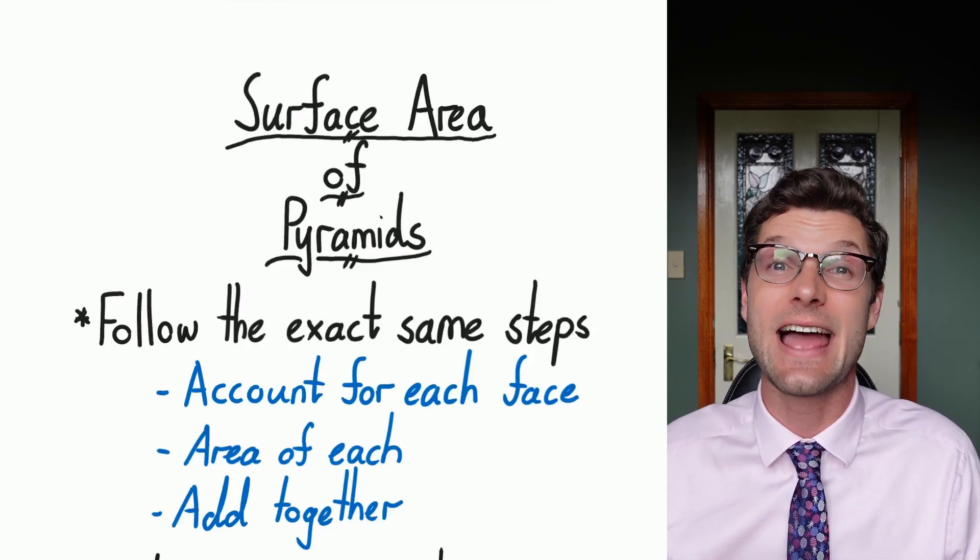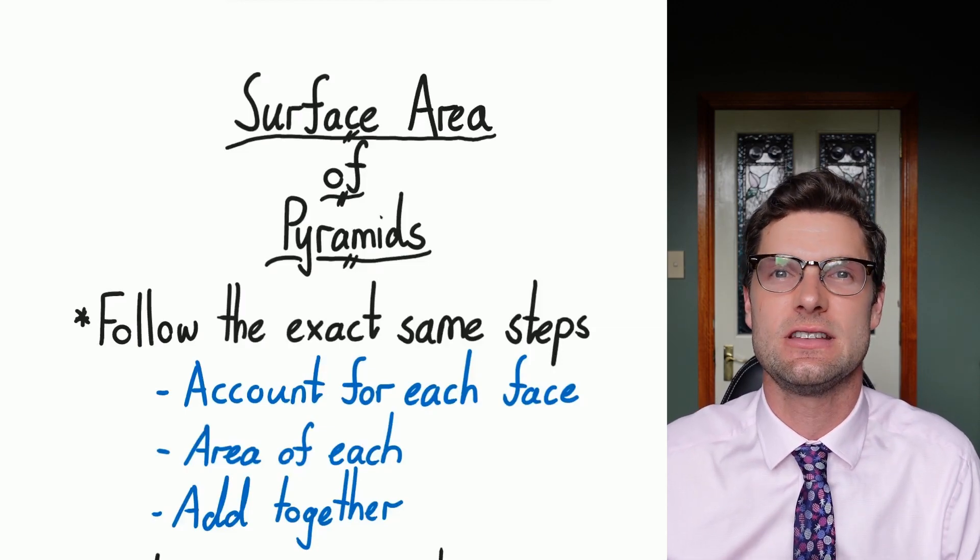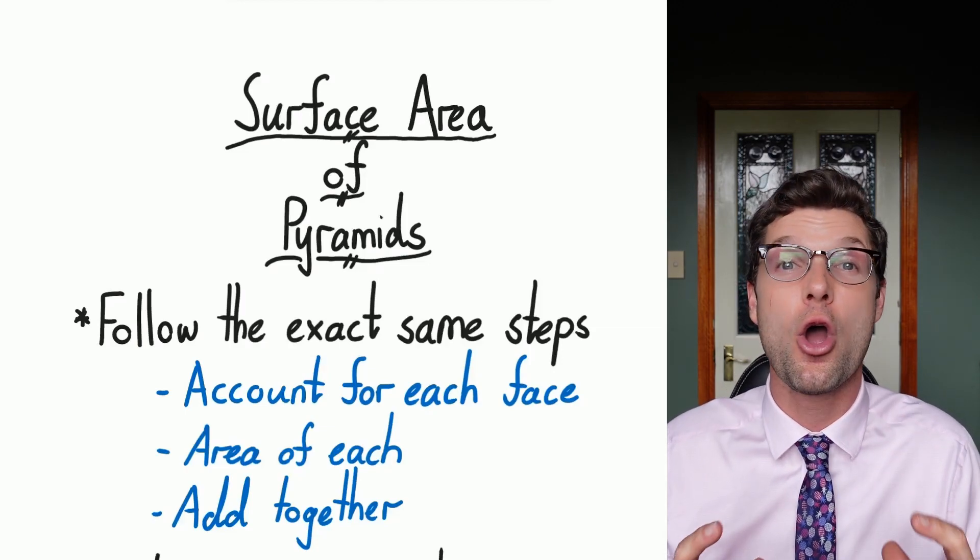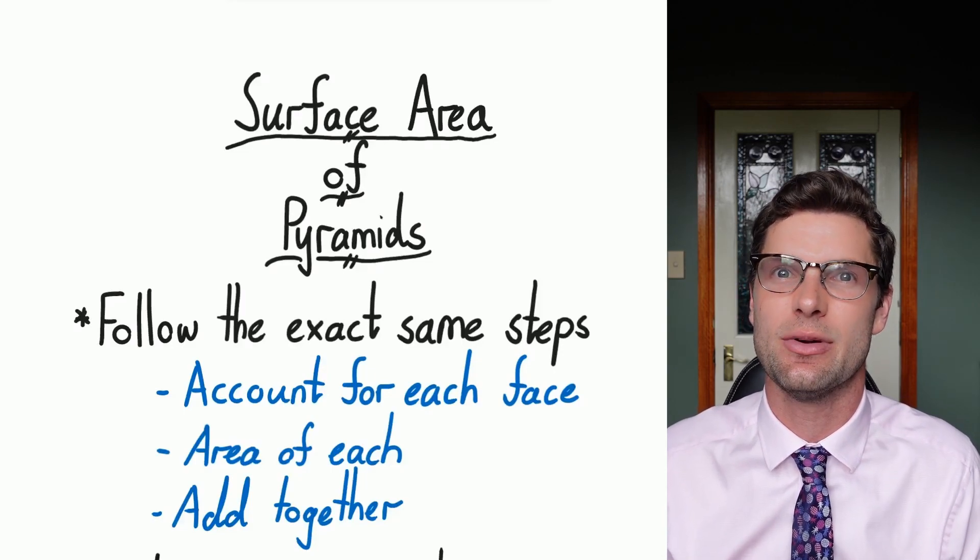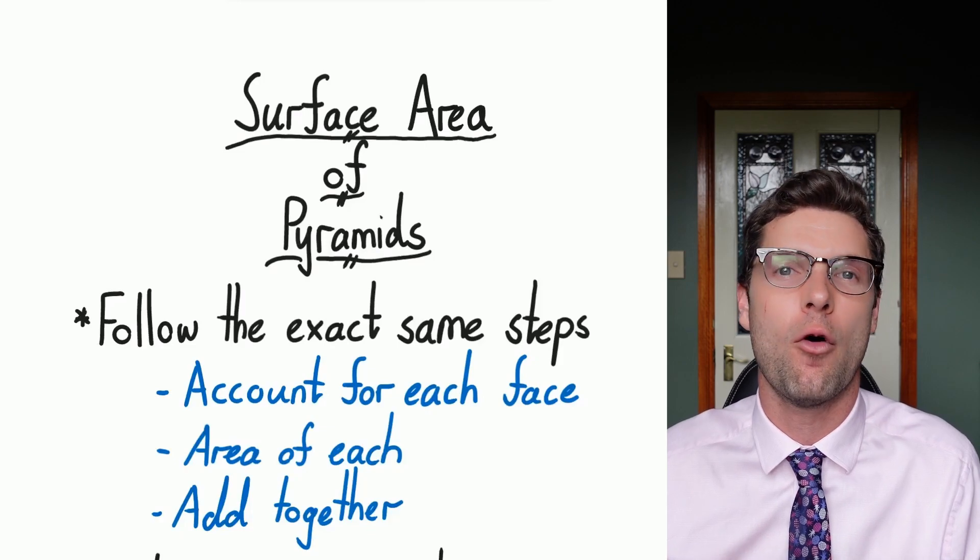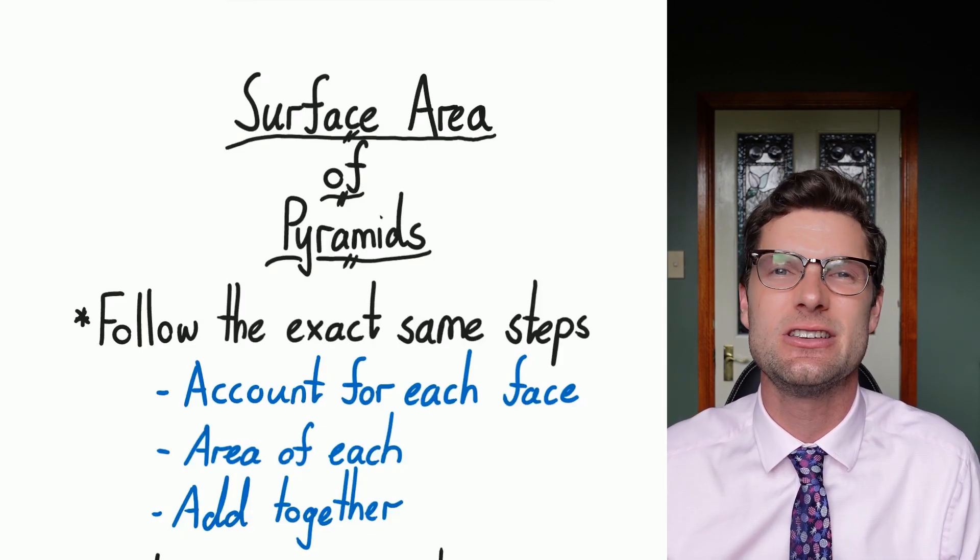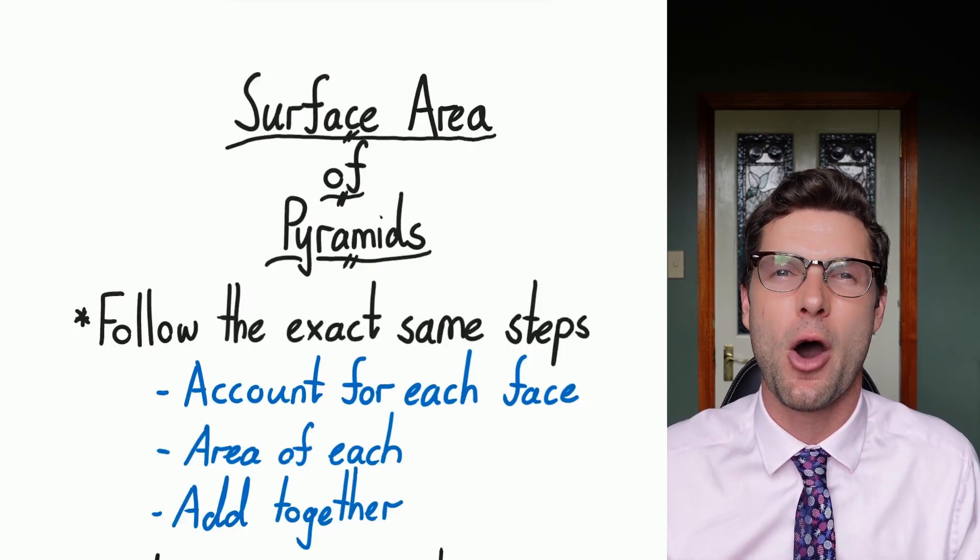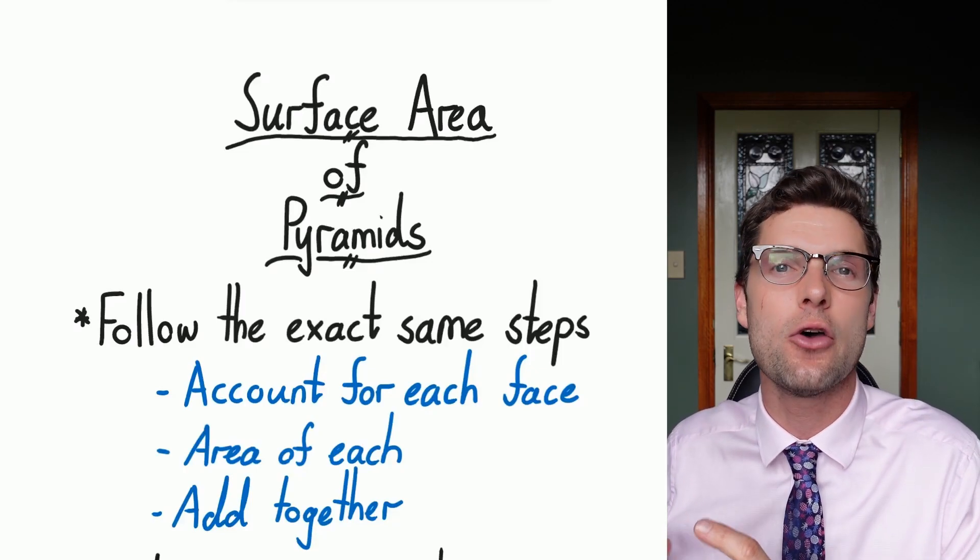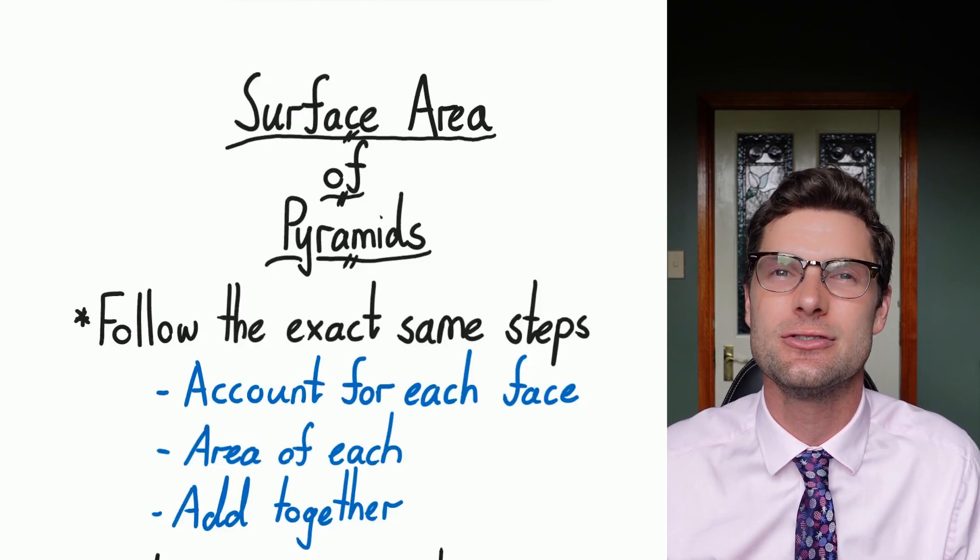Again, we've got to follow the exact same steps for these surface area questions. We have to work out what shapes are actually within this three-dimensional shape, then we've got to find the area of all the shapes present, and then we just have to add them up. So as long as you've got that really clearly in your mind, these pyramids, even though there are extra steps, will become quite cruisy.